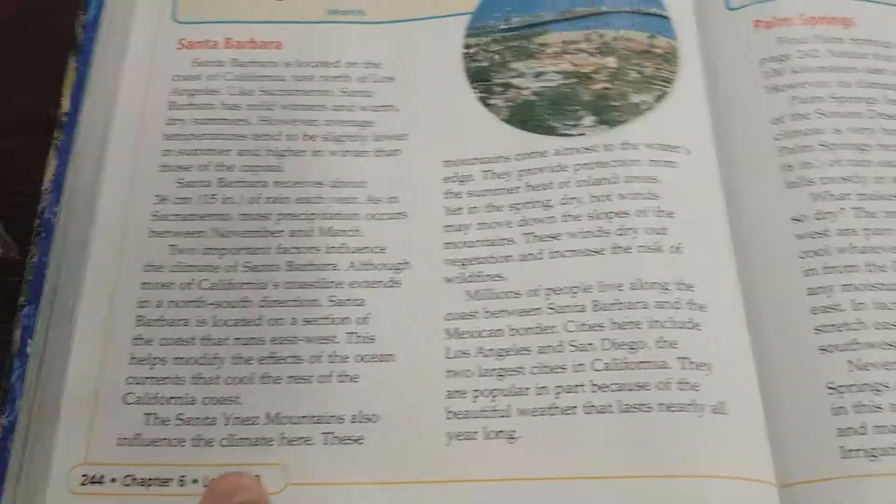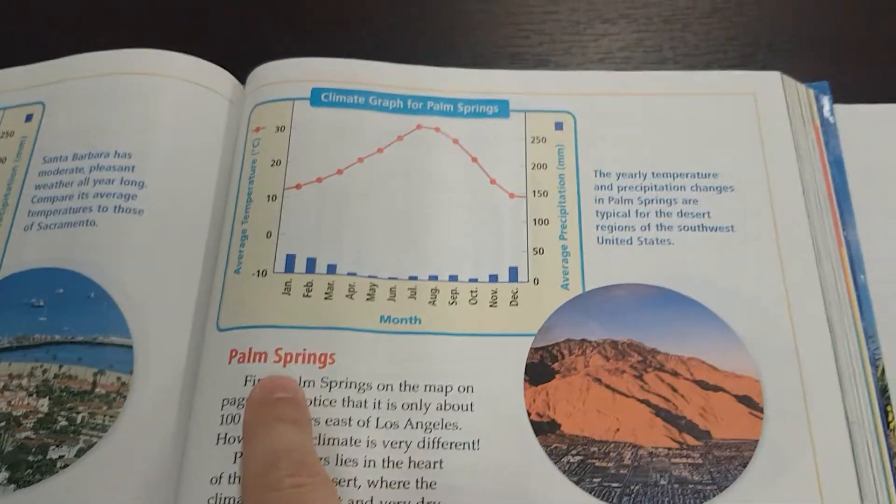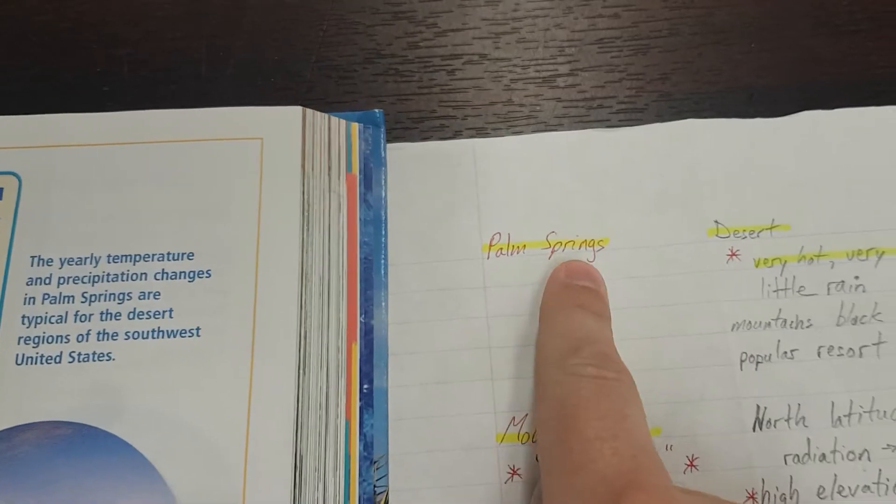All right, day two of California climate. We're over here on page 245 for Palm Springs. Palm Springs in red.